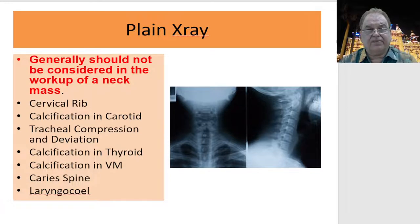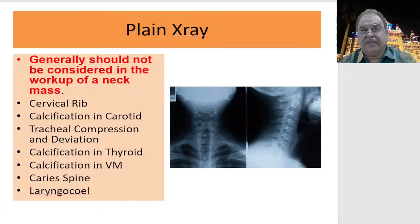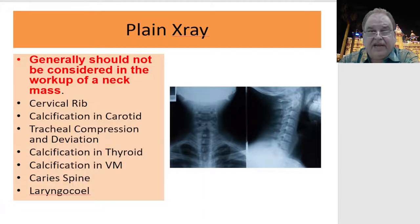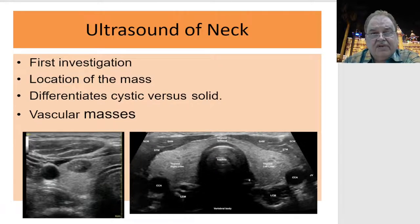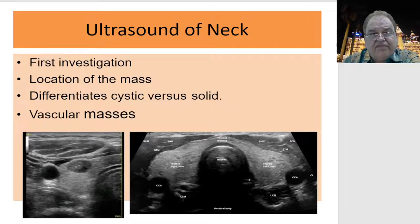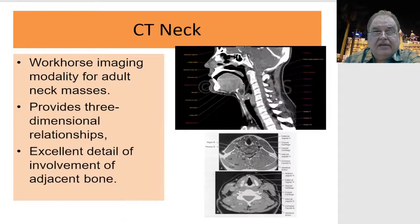On plain X-ray you can see the carotid, tracheal compression and deviation, calcification in thyroid, vascular malformation, and cervical spine or laryngeal changes. Ultrasound is one of the very important investigations — it locates the site of the neck swelling, differentiates cystic from solid, and you must look for vascular masses because if a vascular mass is present, you are not going to put a needle in that.